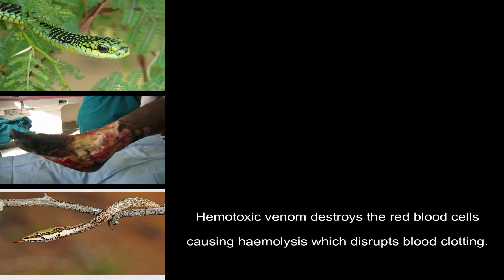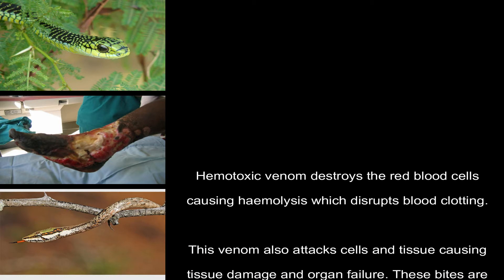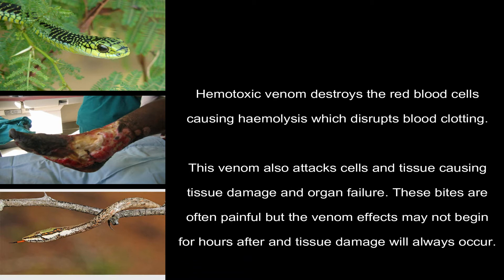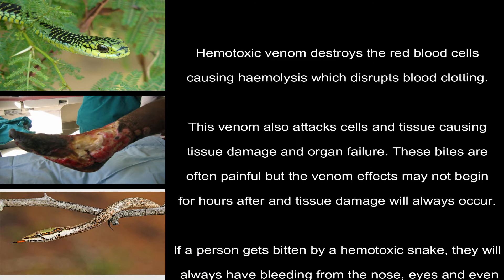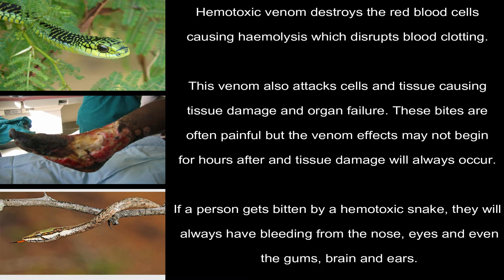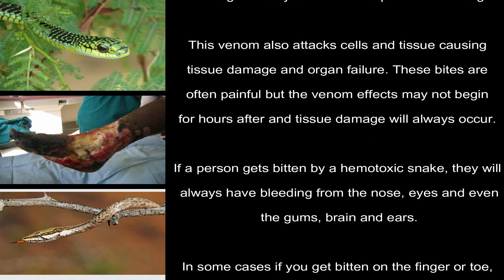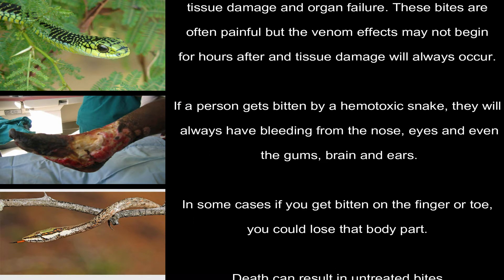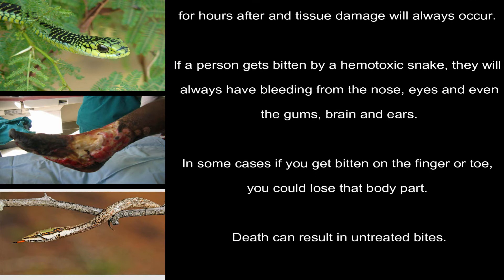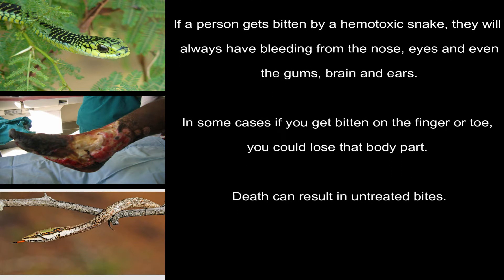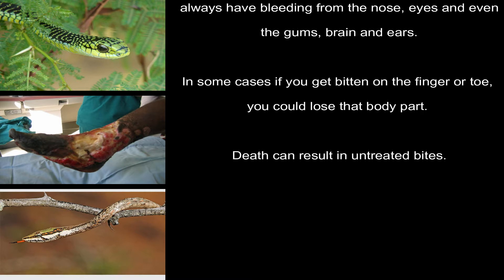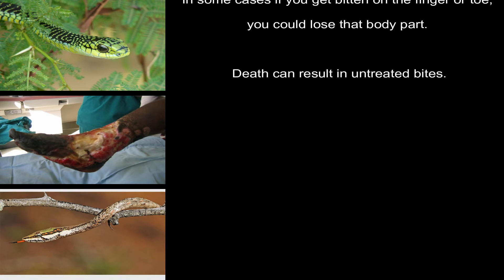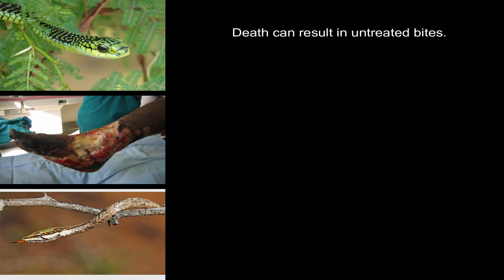Hemotoxic venom destroys red blood cells, causing hemolysis, which disrupts blood clotting. This venom also attacks cells and tissue, causing tissue damage and organ failure. These bites are often painful but the venom effects may not begin for hours after, and tissue damage will always occur. If a person gets bitten by a hemotoxic snake, they will always have bleeding from the nose, eyes, gums, brain, and ears. In some cases, if you are bitten on the finger or toe, you could lose that body part. Death can result from untreated bites.